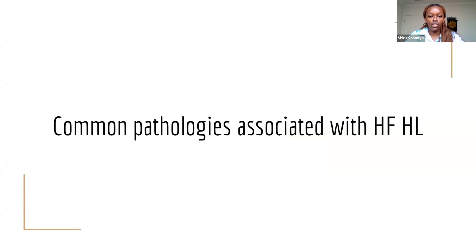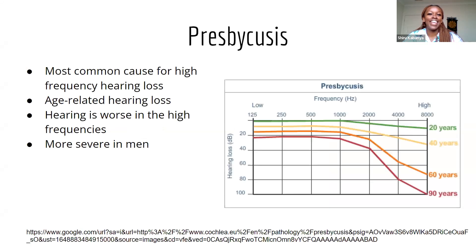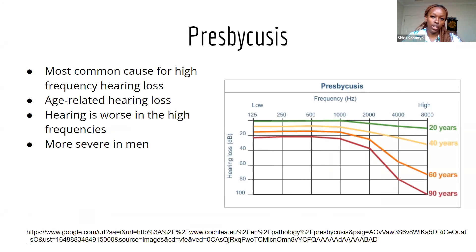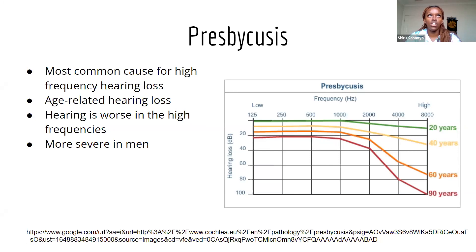The first common pathology is presbycusis, the most common cause of high-frequency hearing loss. It is age-related, seen more in the older population, and is more severe in men. It involves sensorineural hearing loss that gradually slopes toward the high frequencies. It is a disorder of the brainstem and cerebral cortex where sorting and processing of speech information occurs, and can result in social and psychological problems related to embarrassment and withdrawal, as sufferers frequently ask for repeats in conversations or miss out on things.